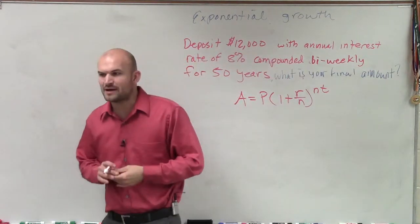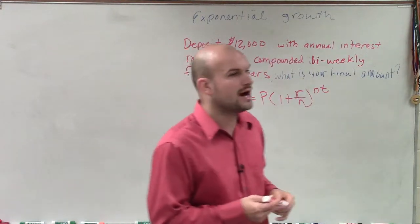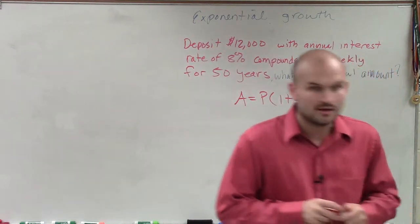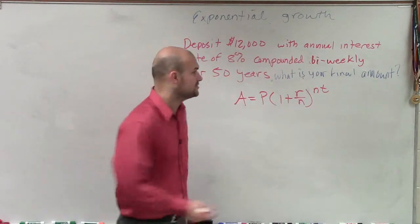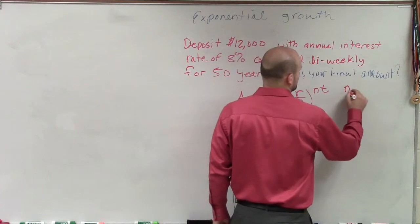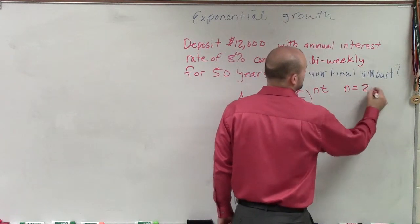So in this problem, it says it's compounded biweekly. So we need to make sure we know how many weeks are in the year. Well, since there's 52 weeks in the year, biweekly would be every other week. So therefore, we could say that N is going to equal 26.